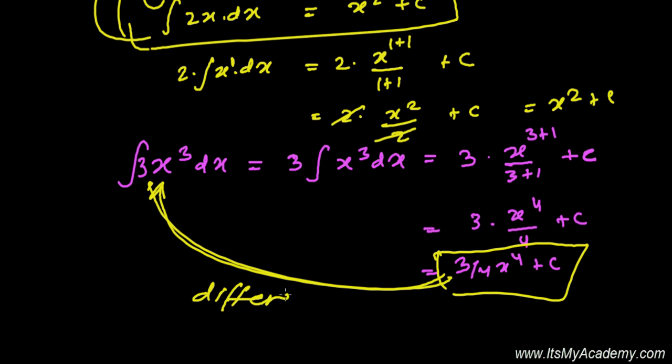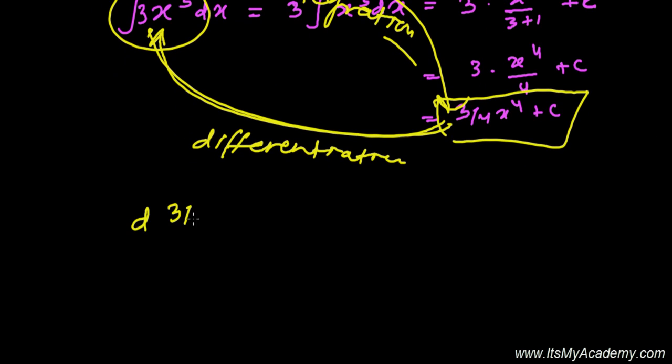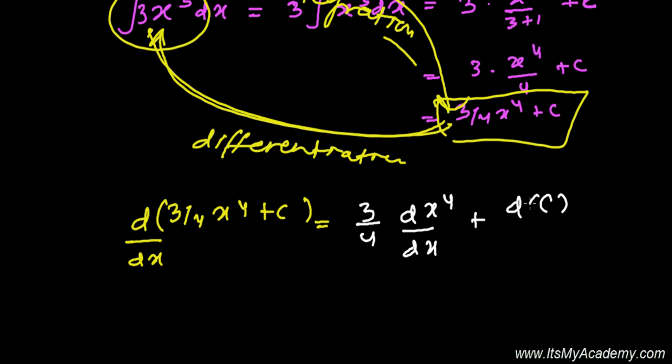Or integration of 3x cubed is 3 by 4 x to the power 4 because both are just opposite process. If it's differentiated, differentiation of 3 by 4 x to the power 4 will give you 3x cubed, and integration of 3x cubed will give you 3 by 4 x to the power 4. So I'm just showing you the derivative of 3 by 4 x to the power 4 plus constant, some constant with respect to x.